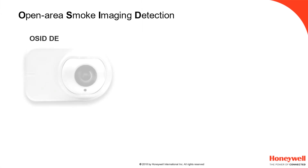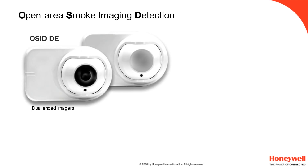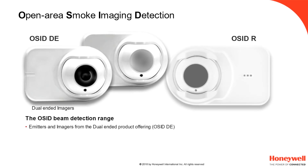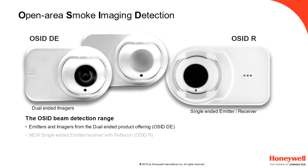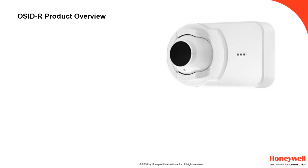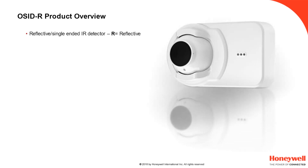The Imaging Smoke Detector range consists of dual-ended imagers and emitters, and now the new OSID R single-ended range used in conjunction with a reflector. The OSID R is a reflective single-ended IR detector. The R in OSID R stands for Reflective.